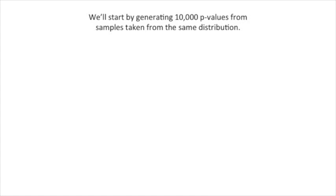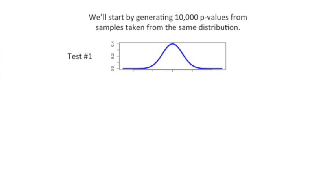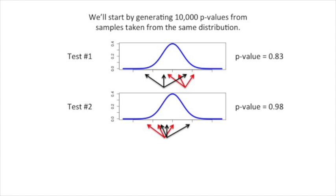We'll start by generating 10,000 p-values from samples taken from the same distribution. We'll start with test number one, using wild-type mice, and take two samples from them. We'll then compare the two samples with a statistical test and calculate the p-value. In this case, the p-value is large — it's 0.83. This is exactly what we expect, because both samples are taken from the same type of mice. We repeat the procedure for test number two and calculate another p-value: 0.98. Again, as expected. We just repeat this procedure 10,000 times.